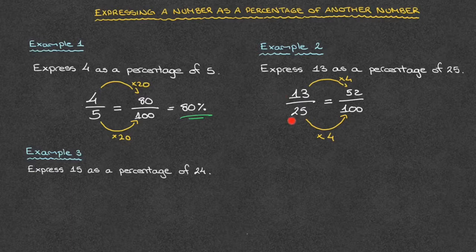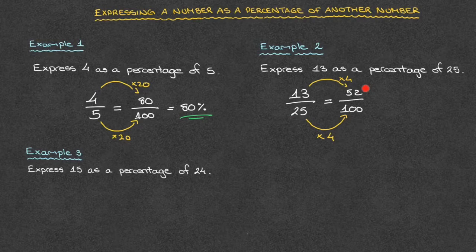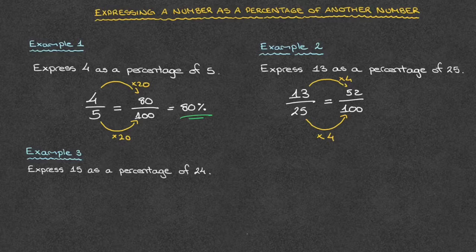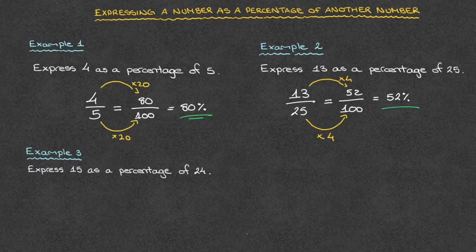So 13 over 25 is equivalent to 52 over 100. And 52 over 100, well, that's equal to 52%. And that's the answer.